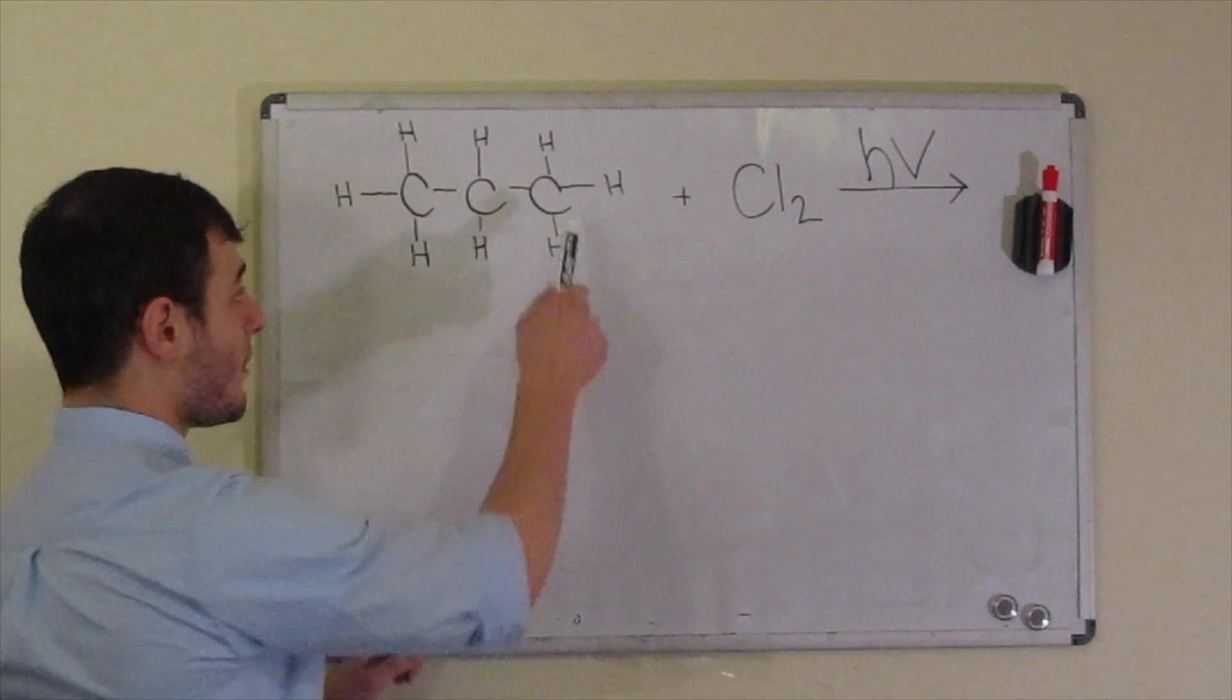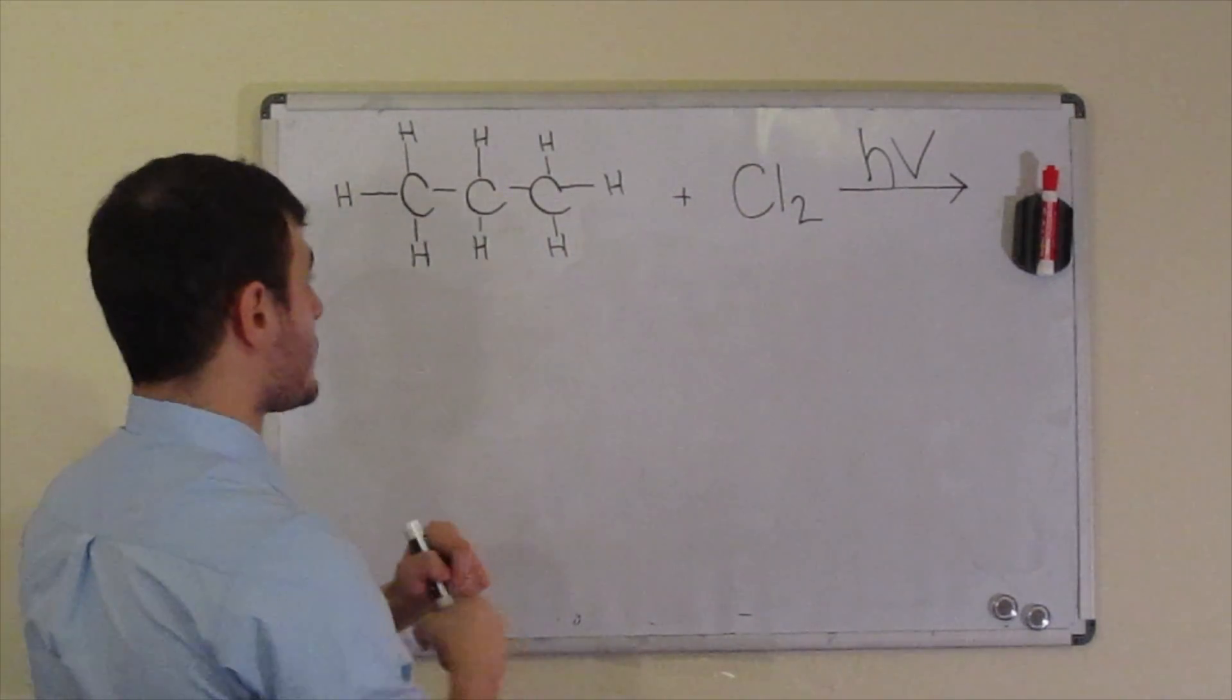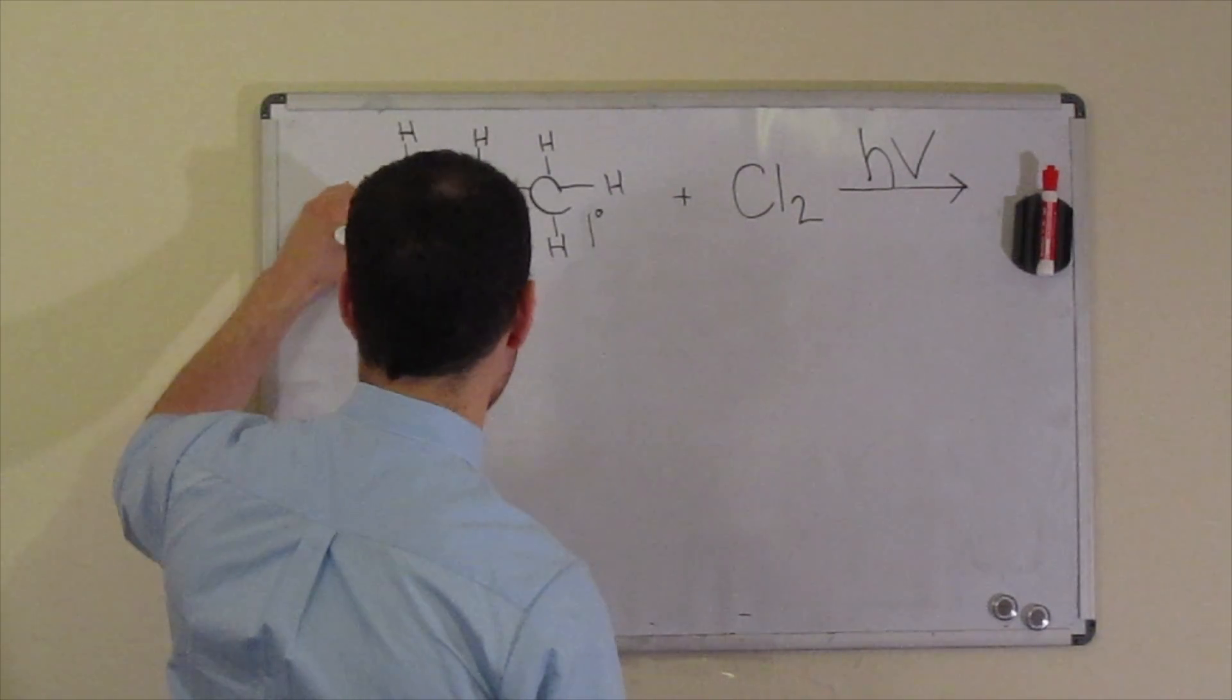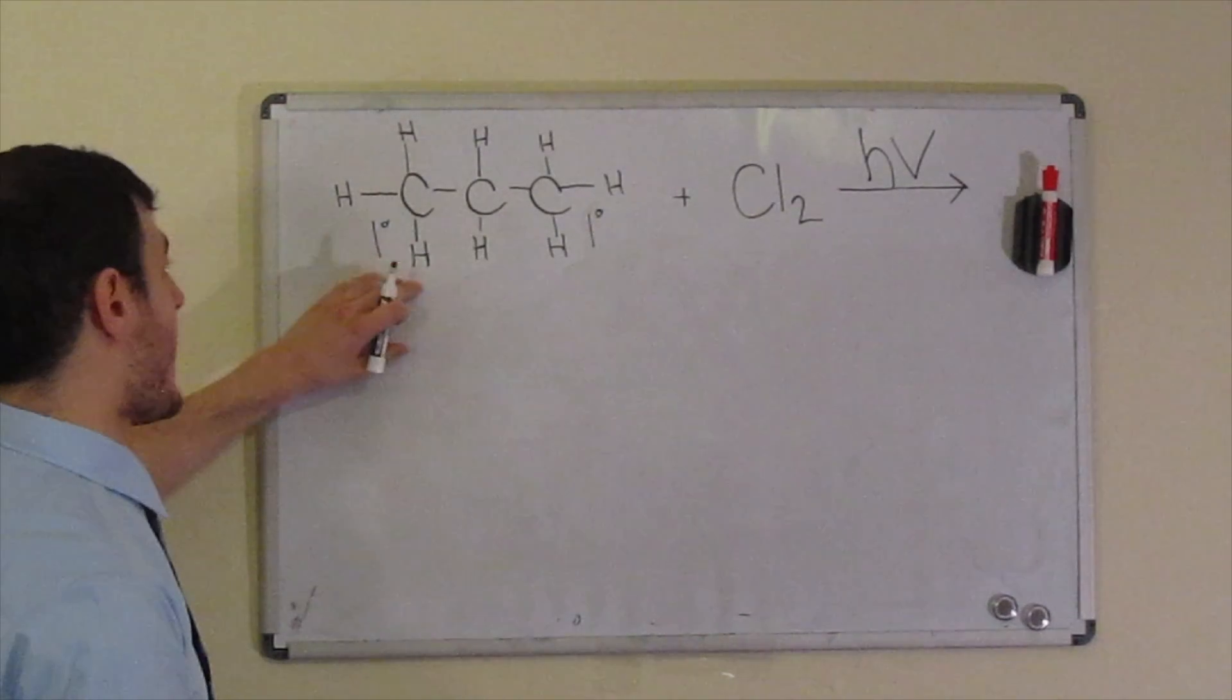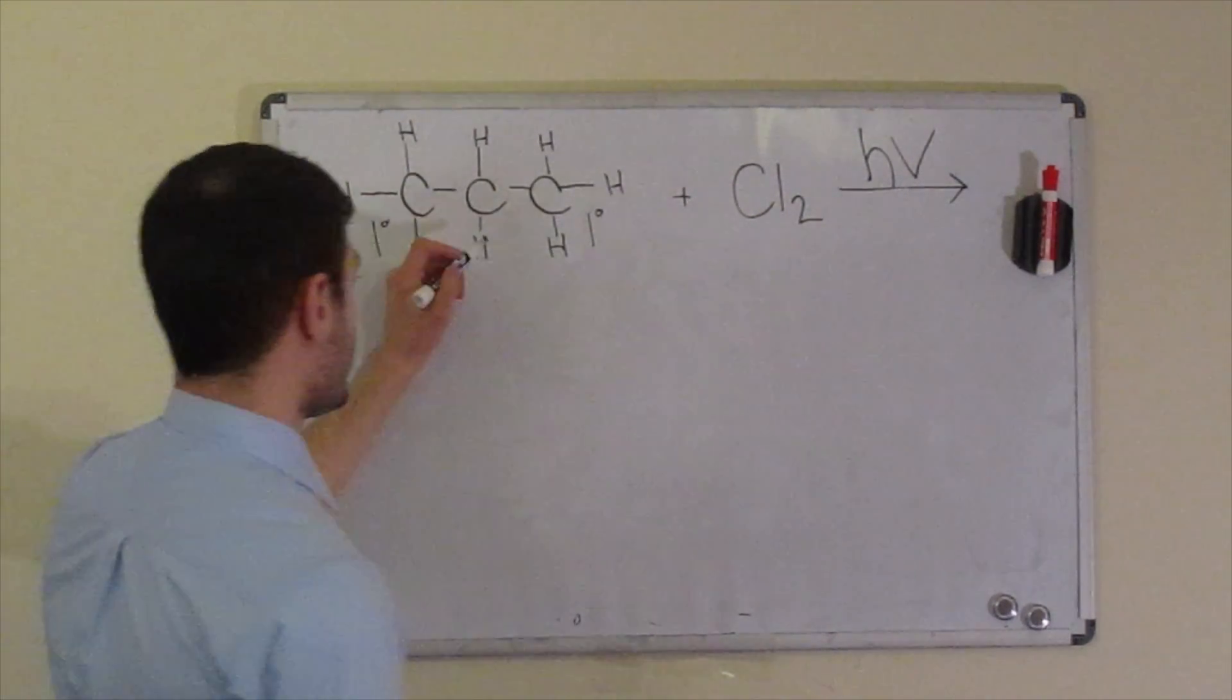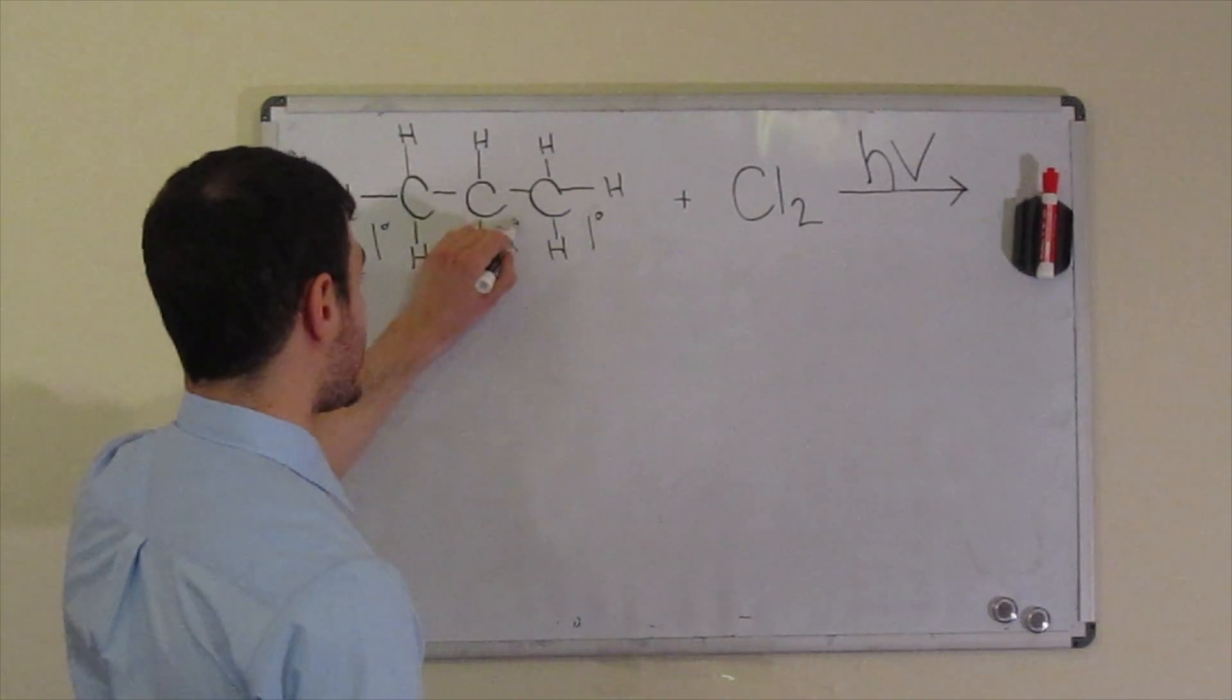So we have names for them. If you notice, this one is attached to only one other carbon. Same with this. So we call these primary. You denote them like that. And we might say that the hydrogens attached to them are primary as well. This carbon here, since it's attached to two other carbons, we say is secondary.